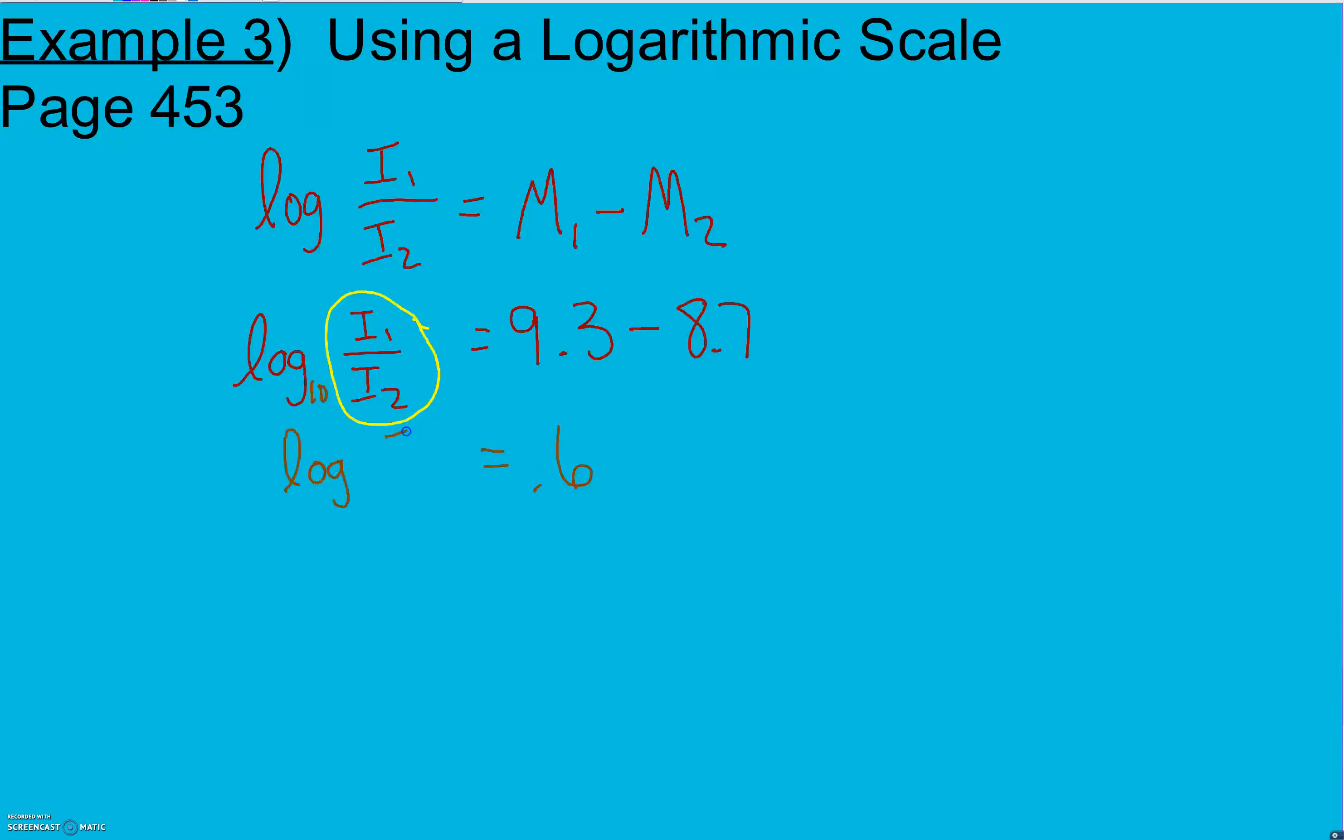So log of our ratio of intensities equals 0.6. Switch it to exponential form. Y equals B to the X power. Our base, again, is 10 because it's our common logarithm. X value is 0.6. 10 raised to the X power equals our intensity ratio. I1 over I2. We can approximate how much that is with our calculator. So take 10 raised to the 0.6 power. And we get 3.98, which is about 4. So the ratio of our intensities is about 4, which means the December earthquake was about 4 times as intense as the March 1. So 4 times as strong or as intense. So the ratio here is about 4.